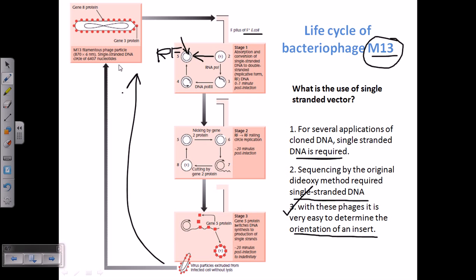So this is the process of the life cycle of M13 phage. It can carry both types of DNA — single-stranded as well as the double-stranded RF form. We can take this single-stranded DNA for our desired purposes: for dideoxy sequencing, as well as to understand the orientation of our insert.